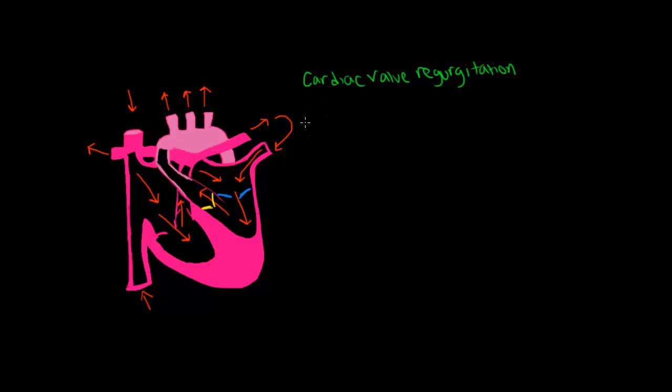So what happens if these valves are not working properly? What we are going to discuss today is called mitral valve regurgitation, and we are also going to discuss aortic valve regurgitation. Both of these are similar in some ways, but they also have differences. Let's think about what regurgitation means in order for you to remember what is happening in your heart during cardiac valve regurgitation.